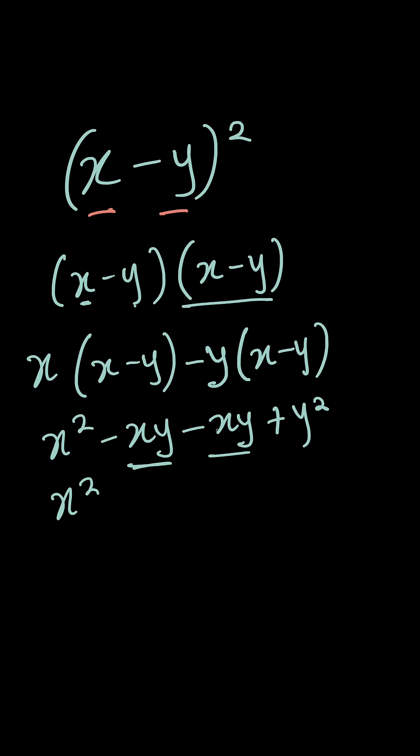Now we have -xy - xy. So since the variables are the same, we can subtract them. So we have negative one, negative one, so that becomes -2xy + y². So now the variables are different, so we cannot do anything further.